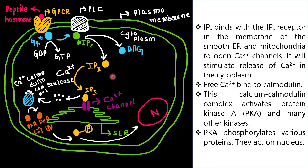Next is IP3. IP3 binds with the IP3 receptor in the membrane of the smooth endoplasmic reticulum and mitochondria to open calcium channels. This stimulates the release of calcium into the cytoplasm. Free calcium then binds to calmodulin.